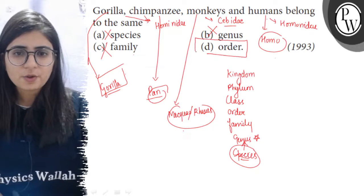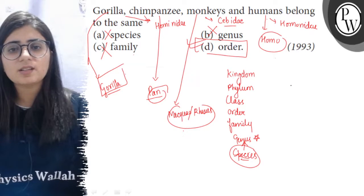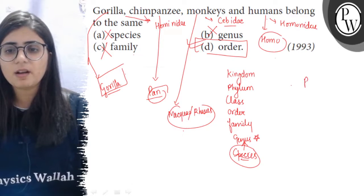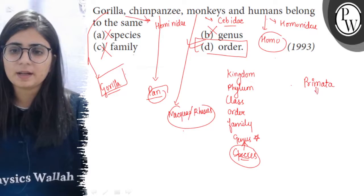Now, order. This is the correct answer because all these animals - Gorilla, chimpanzee, monkeys, and human beings - are all placed in the same order, which is Order Primates.